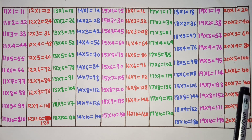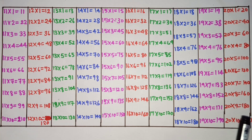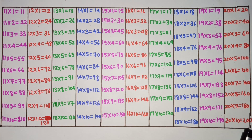20 7s are 140, 20 8s are 160, 20 9s are 180, 20 10s are 200.